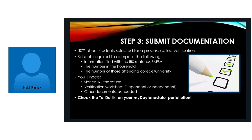Step three is documentation. What happens is — and it doesn't matter whether you go to Daytona State, or whether you go to UCF, or Embry-Riddle, or Stetson, or wherever you decide to go — 30% of students are selected for a process called Verification, where we do require additional documentation. Schools are required to compare the data submitted to the IRS and the data you've submitted on the FAFSA form to make sure the information matches.